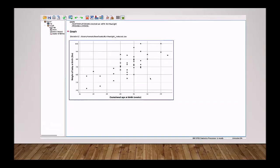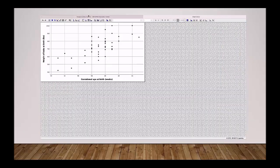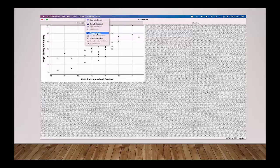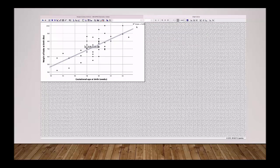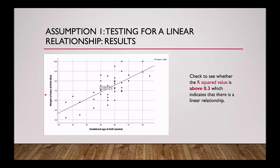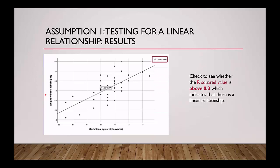This will produce a scatter plot for you. To get the line of best fit, you'll double-click on the graph which will open the Chart Editor tab. From here you'll go up to Elements and then Fit Line at Total. This will produce the line of best fit and also your R-squared value. As you can see from the graph, the data does appear to have a linear relationship and also a positive one. One thing we can use to check whether there is a linear relationship is whether the R-squared value is above 0.3. Our R-squared value here is 0.499, so this indicates that there is a linear relationship between the weight of the babies and gestational age.